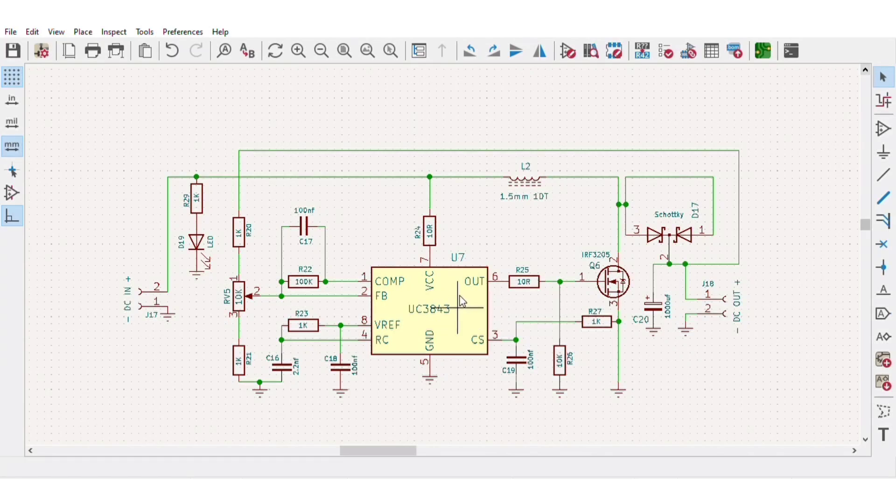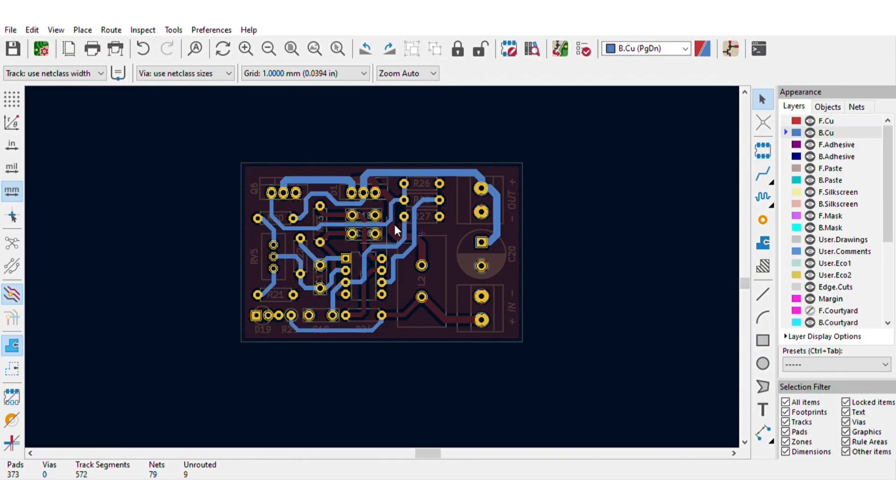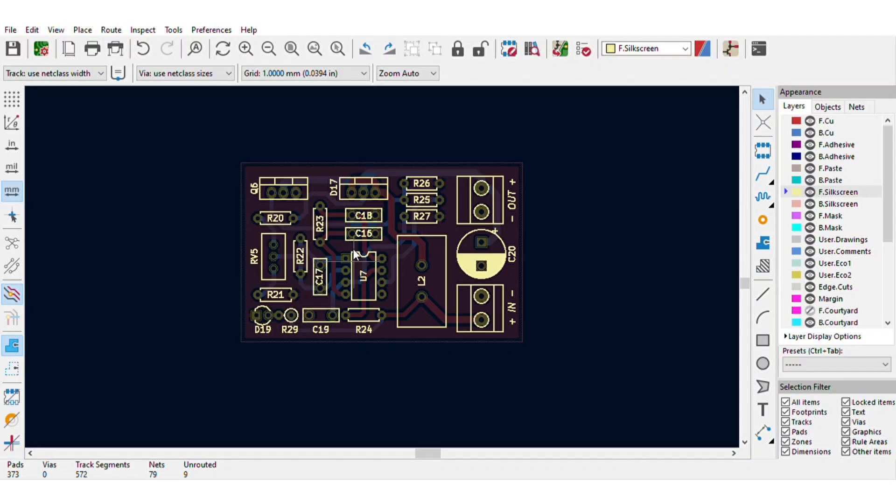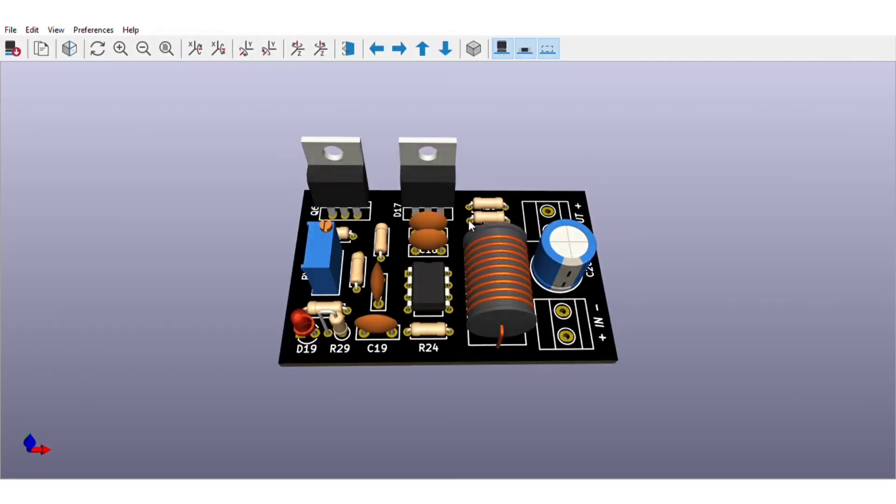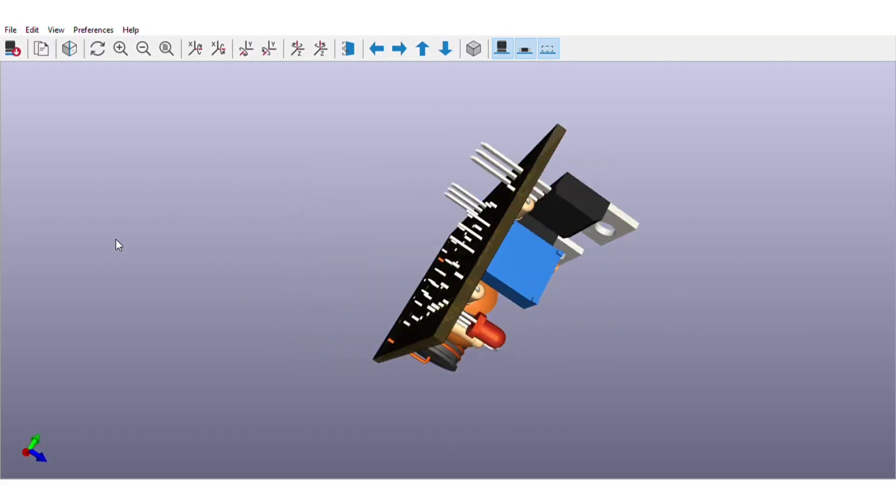And the switching is done by this MOSFET. Also the output sends the feedback through the circuitry to IC for the voltage stabilization. Then I converted schematics into the PCB layout and the PCB is going to look like this. You can download both circuit diagram and PCB files link is in video description.